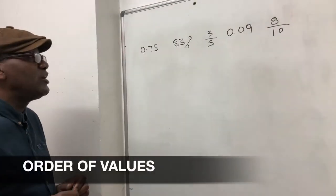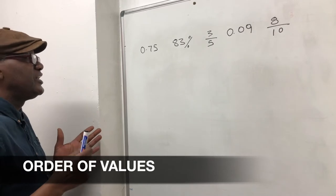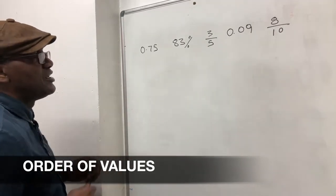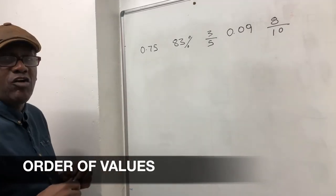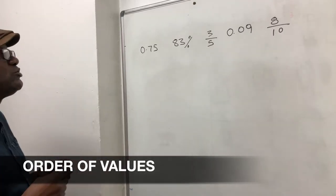Hi. Today we are looking at order of value. The aim today is to look at these numbers and put them in order of value, smallest all the way to the biggest. So how do you do this?